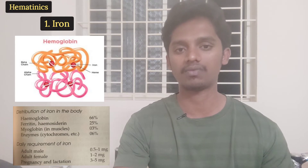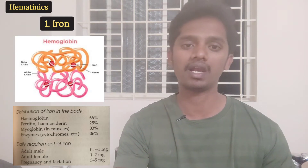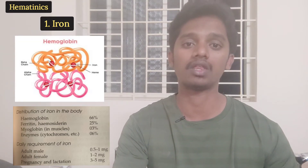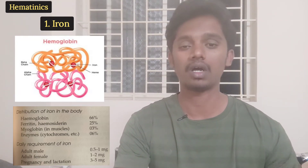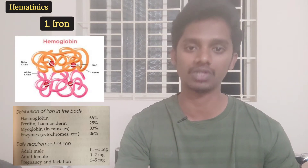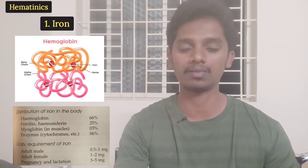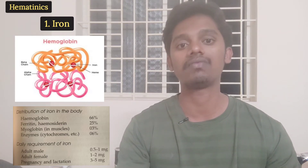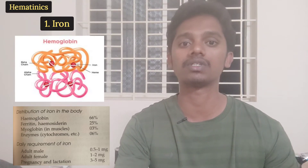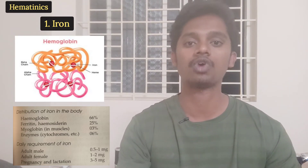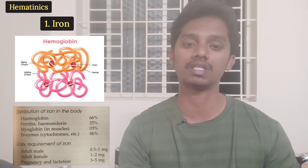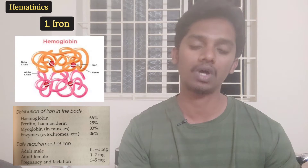The daily requirement of iron for a male is 0.5 to 1 mg daily. For a female, it is double — about 1 to 2 mg. For pregnant women, the requirement increases to 3 to 5 mg. Females require more iron due to menstrual blood loss, which means more RBC must be produced and erythropoiesis is increased.